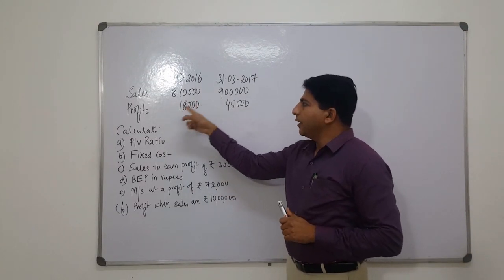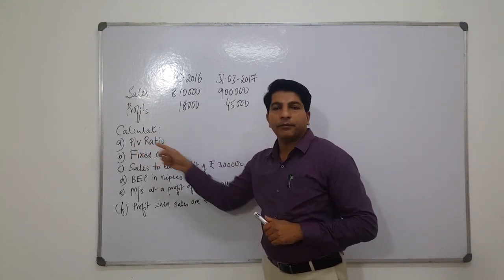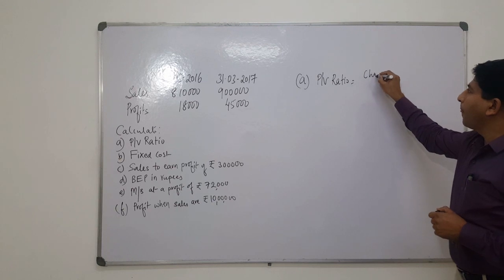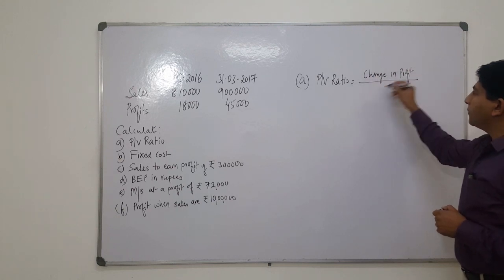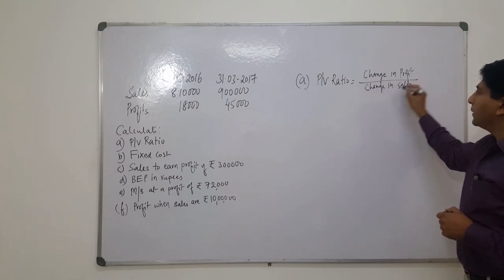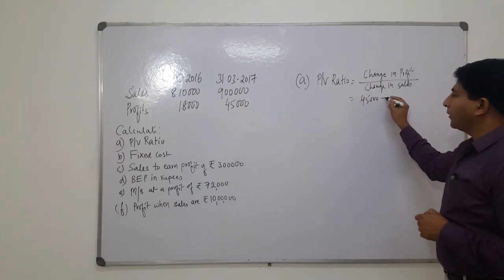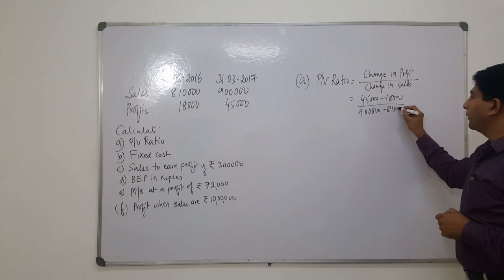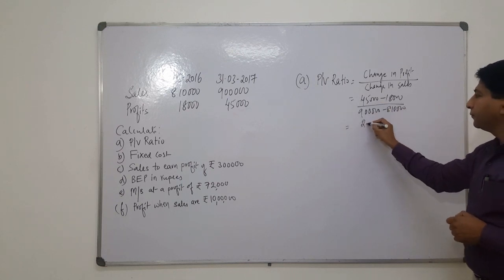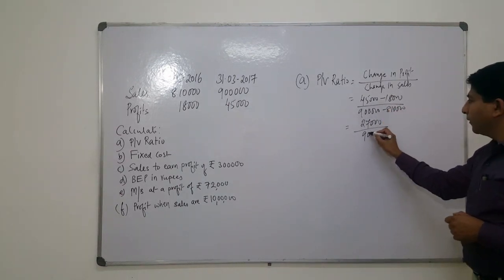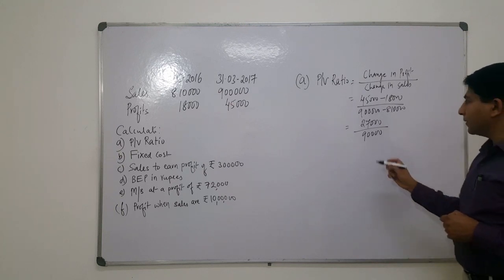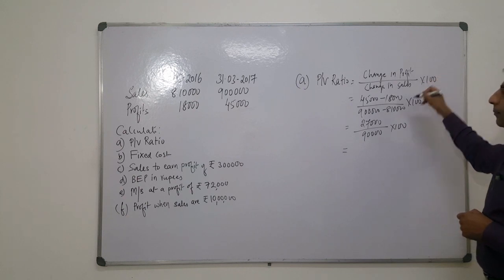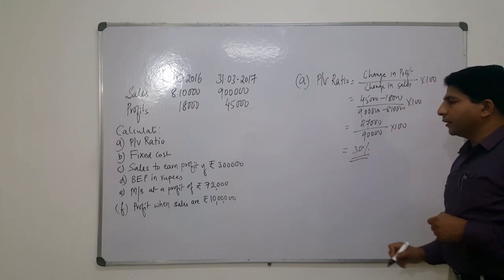In this question, the sales and profits of two years are given, and we are asked to calculate the PV ratio. PV ratio equals change in profit divided by change in sales: that is 45,000 minus 18,000 divided by 9 lakh minus 8 lakh 10,000, which gives 27,000 divided by the change in sales. Multiplying by 100, we get 30% as the PV ratio.